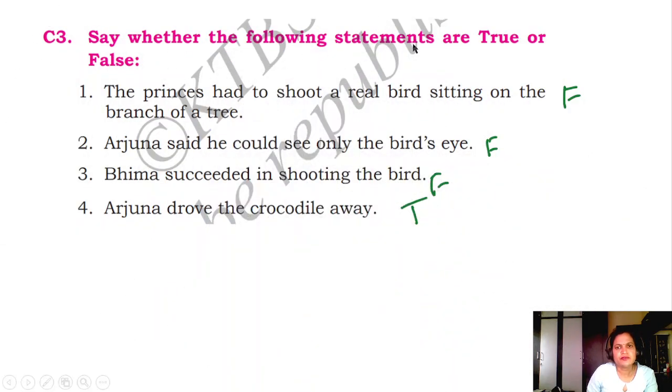D3: Say whether the following statements are true or false. First one: The princes had to shoot a real bird sitting on the branch of a tree. False. Second one: Arjuna said he could see only the bird's eye. False. Third one: Bhima succeeded in shooting the bird. False. Fourth one: Arjuna drove the crocodile away. True.